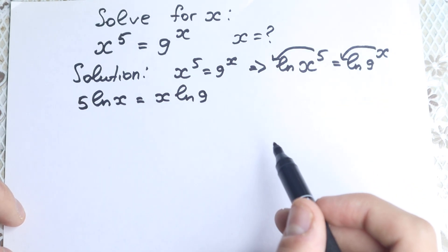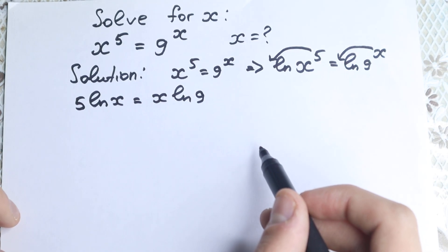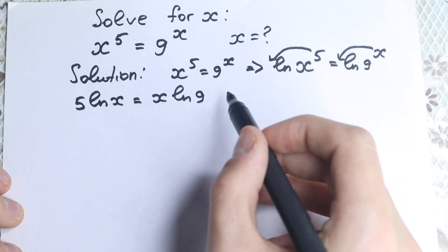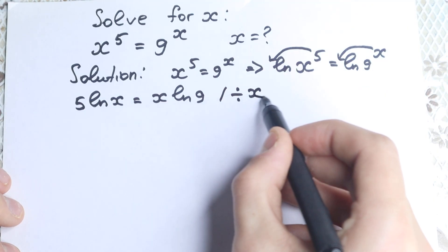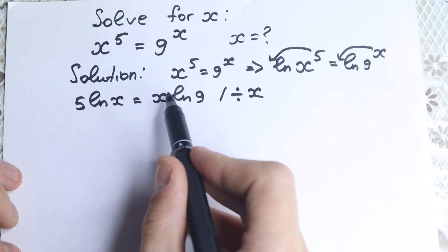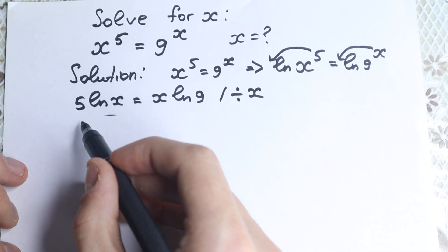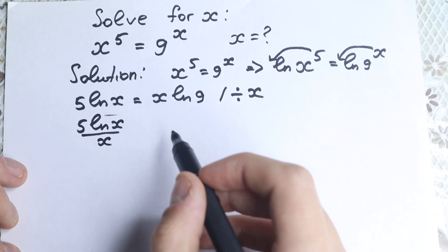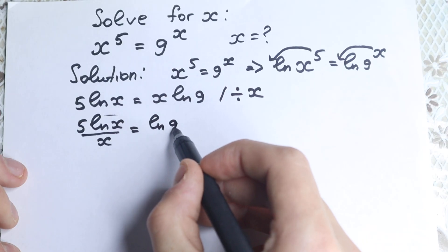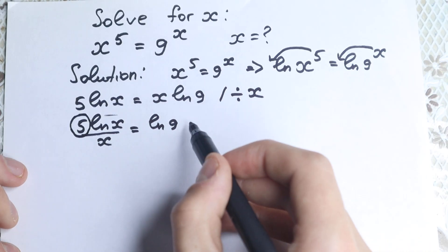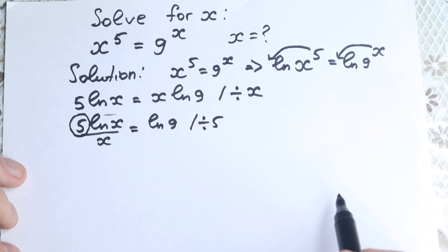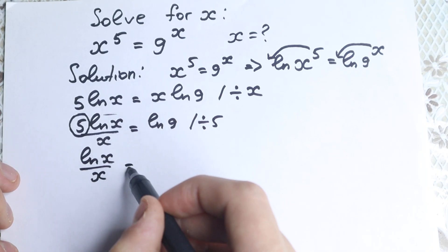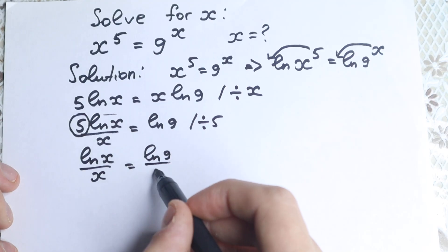From this expression we have this one, which is really great. Now let's try to regroup our elements — bring our variables from right to left and our constant from left to right. For this, I want to divide both sides by x. We can cancel the x and we get 5·ln(x)/x on the left-hand side equal to ln(9). Then let's divide both sides by 5, giving us ln(x)/x = ln(9)/5.